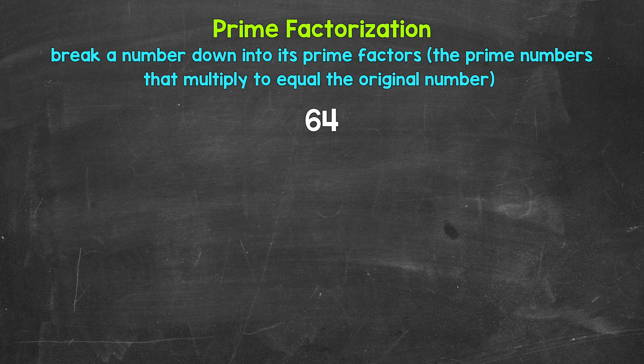So taking a look at 64, we need to start breaking this down by thinking of two factors — two numbers that multiply to give us 64. Well, 8 times 8 equals 64. 8 is a factor of 64, so let's break 64 down into 8 and 8.